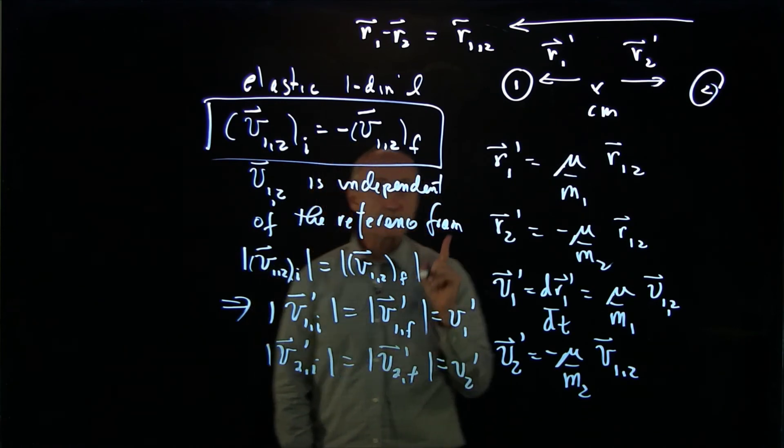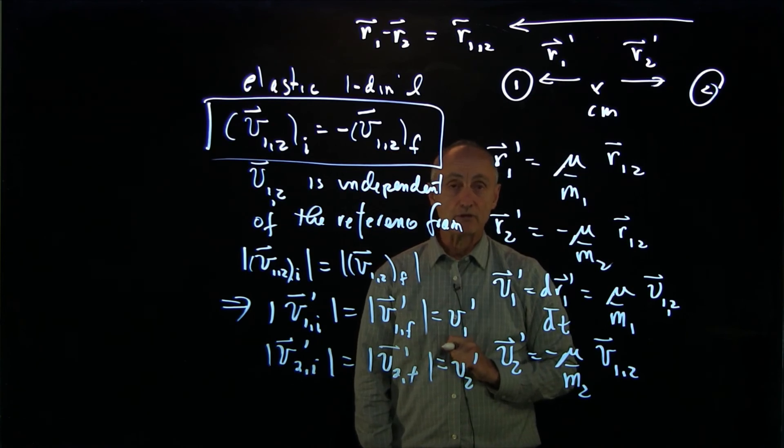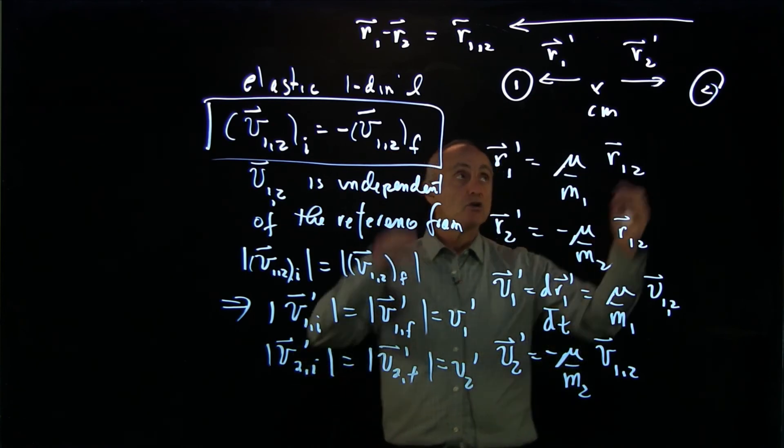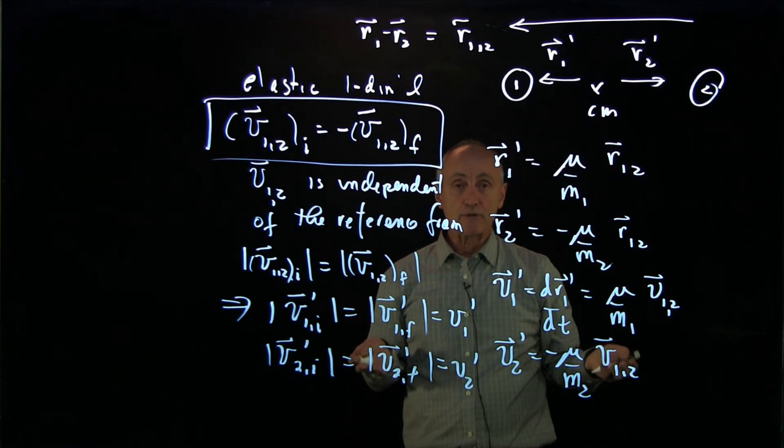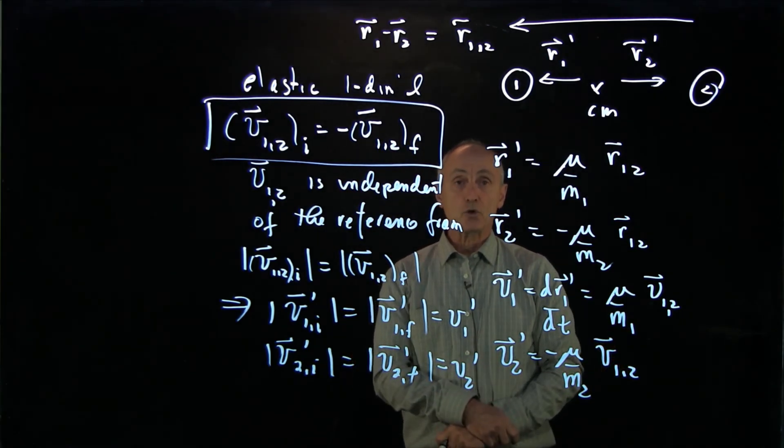And this will make our analysis of collisions in the center of mass reference frame very easy. Two objects, when they're colliding in the center of mass reference frame, their speeds do not change. Only the direction of their velocities change.